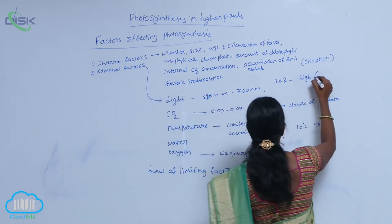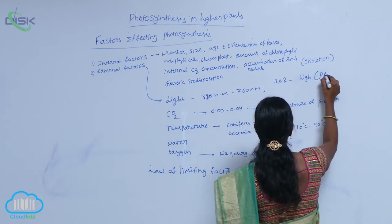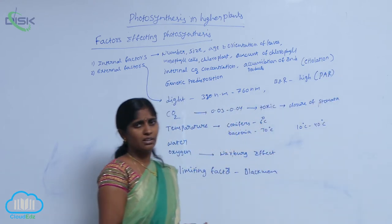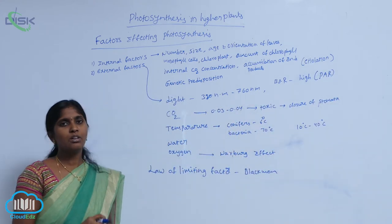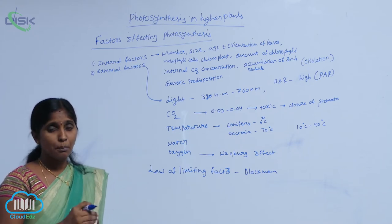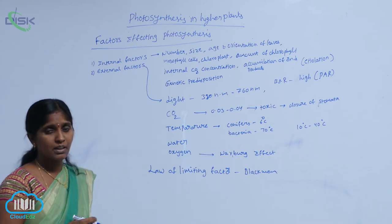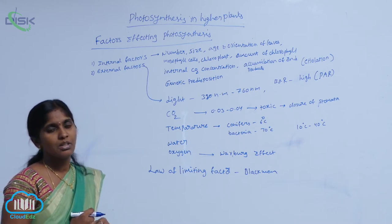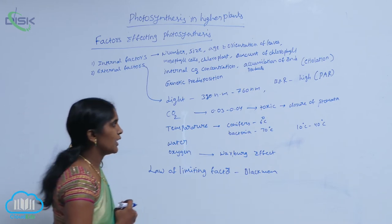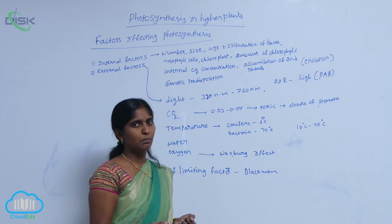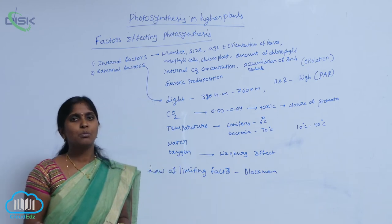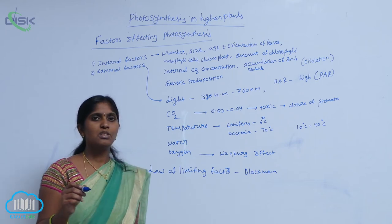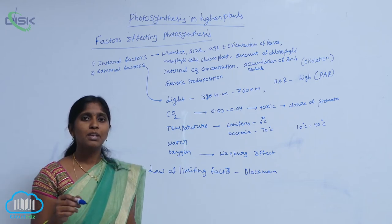Green light is not absorbed by the plant but is reflected by it; hence, plants appear greenish in color. Since there is no absorption of green light by the plant, photosynthesis using green light is completely absent.